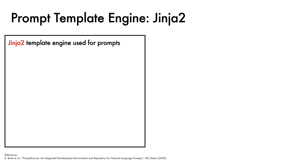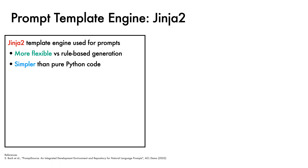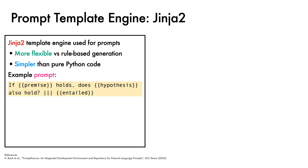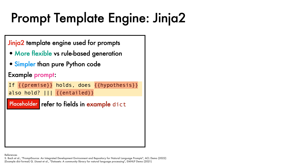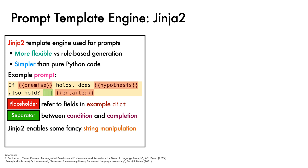The Jinja2 template engine is used to author the prompts. This offers more flexibility than rule-based generation but avoids the complexity of pure Python code, which can be harder to analyse. An example construction of a prompt in Jinja2 is: 'if premise holds, does hypothesis also hold', followed by a separator, and then 'entailed'. The placeholders in curly braces reference fields in the corresponding example dict supplied by the datasets library, while the three vertical line separator is placed between the conditioning text and the target completion. Note that Jinja2 does enable some fancy string manipulation, but the PromptSource guidelines note that most use cases can be covered with a small subset of the full functionality.